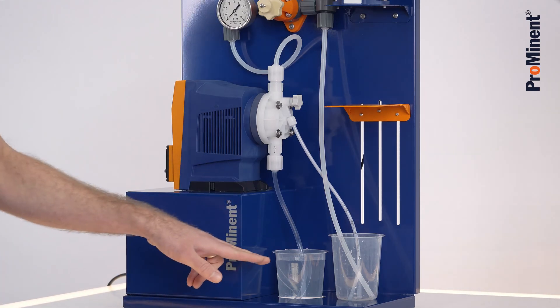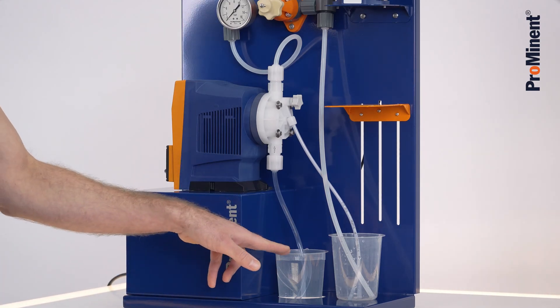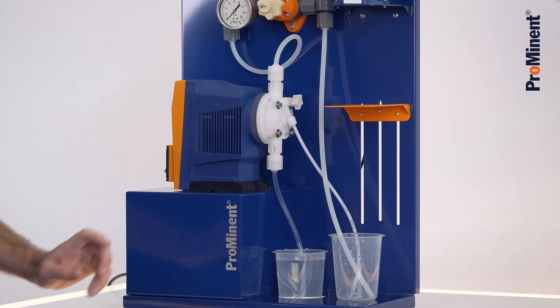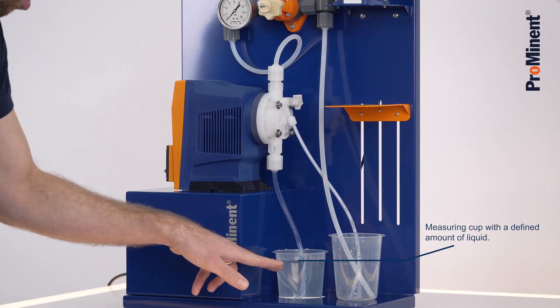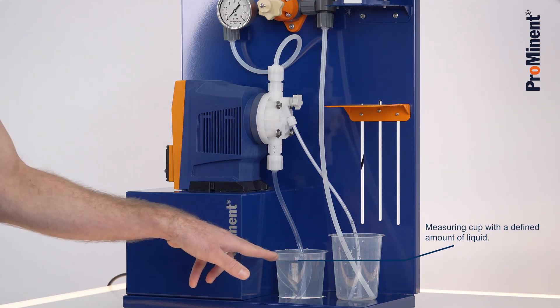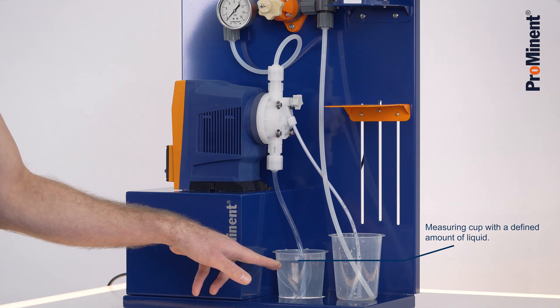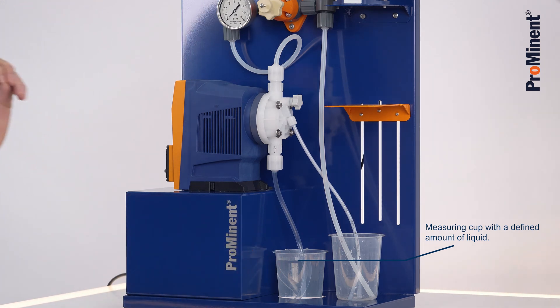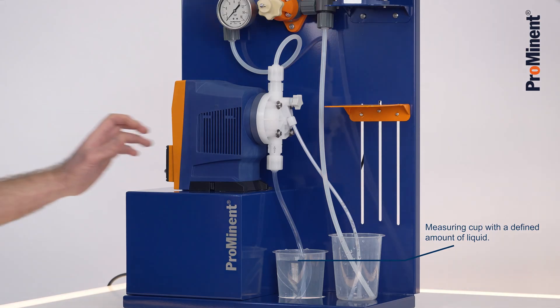On the suction side you can place a calibration vessel or a scale. Always mark how much liquid is in your calibration vessel and now you can start calibrating through the suction side.